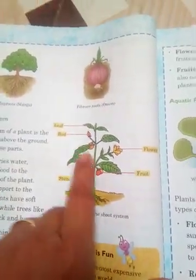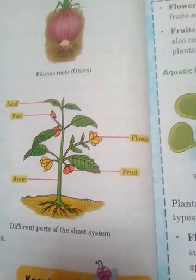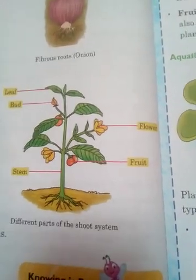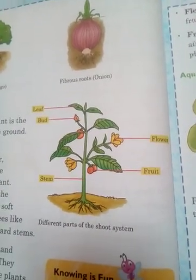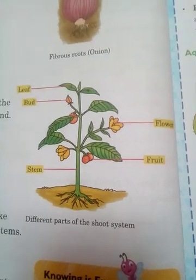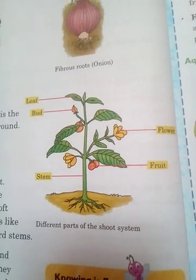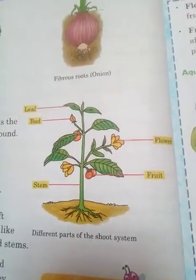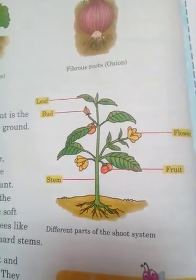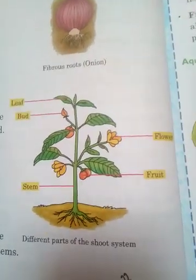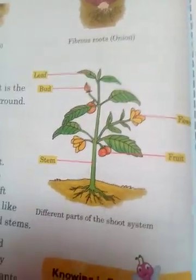Flowers help the plant to produce fruit, and fruits contain seeds. Seeds can grow into a new plant. Fruits are often used as food — for example, this is the season of mango, and inside the mango fruit there is a big seed that can grow a new plant. So in this video we have studied the shoot system and the types of roots. Thank you.